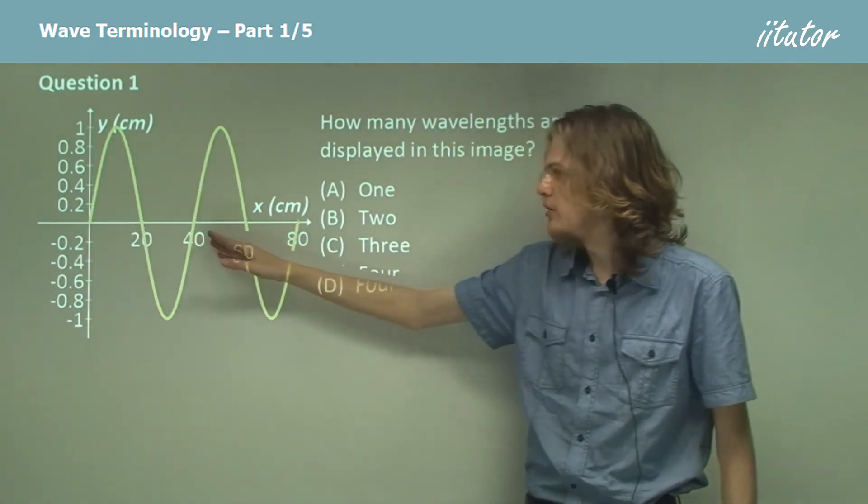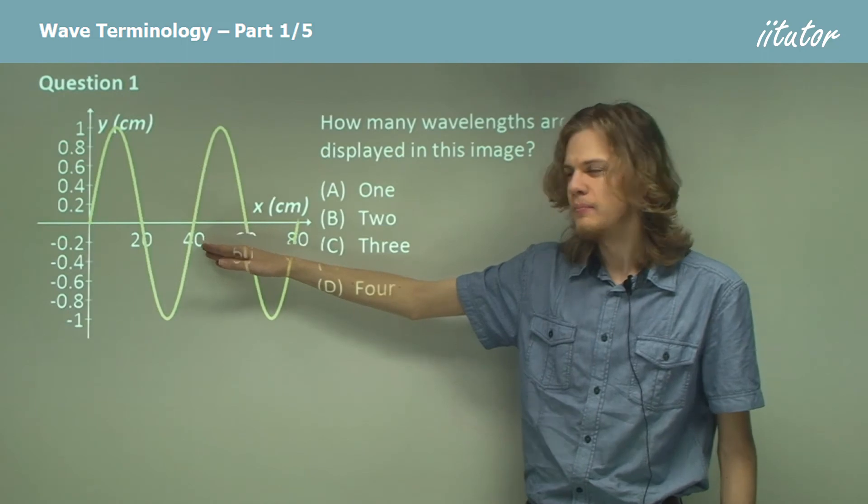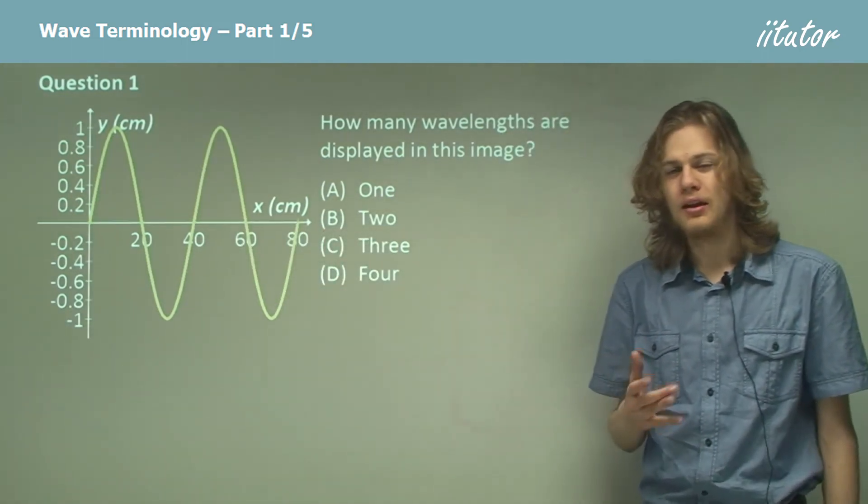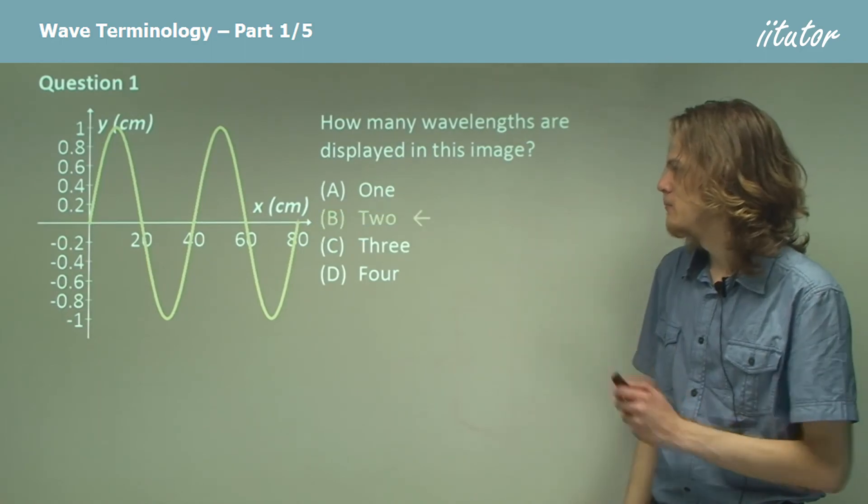That means up until about 40, we have a single wavelength, and then up to 80, we have a second wavelength. So our answer is simply two wavelengths.